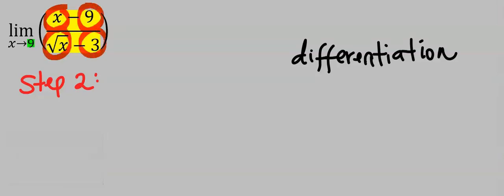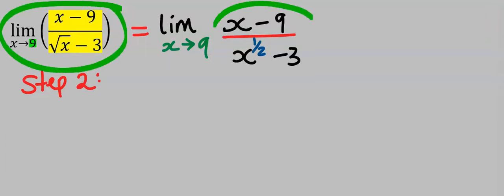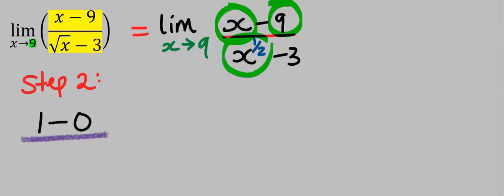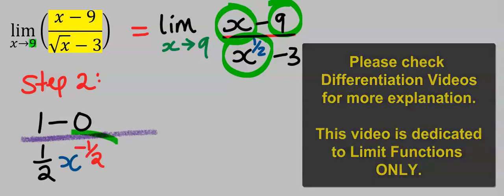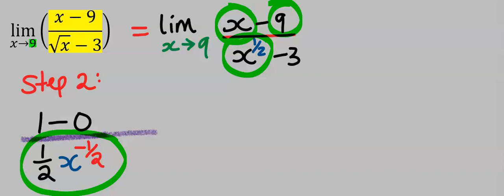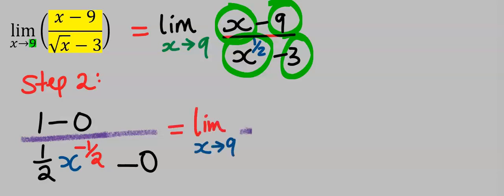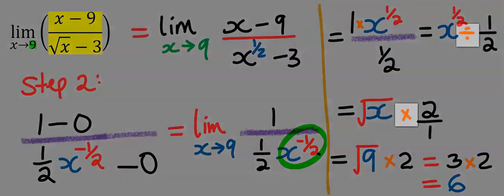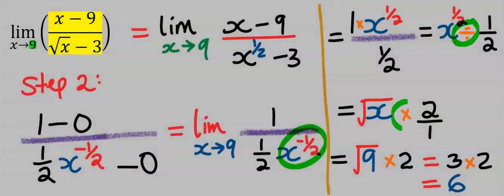Before we differentiate, let's remodify the function. At the denominator, differentiate x and you have one. Next differentiate nine to get zero. Next differentiate x to the power of one over two and you're going to get one over two x to the power of minus one over two. Next differentiate three and you're going to have zero. Next take the limit as x tends to nine. Applying law of indices and changing the division to multiplication sign and solving carefully, your answer is six, which is same as we got earlier.